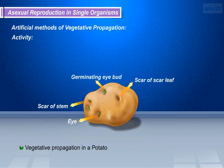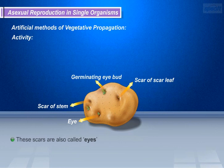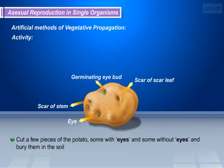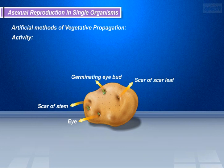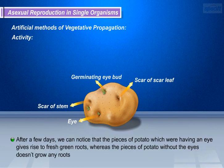Let us describe a small activity to explain vegetative propagation in the potato. Take a fresh potato and observe scars on it with the help of a magnifying glass. You may find lateral buds in them. These scars are also called eyes. Cut a few pieces of the potato — some with eyes and some without eyes — and bury them in soil. Water the pieces regularly for a few days. After a few days, the pieces with eyes give rise to fresh green roots, whereas the pieces without eyes do not grow any roots. This shows that new plants arise from the buds of the potato.